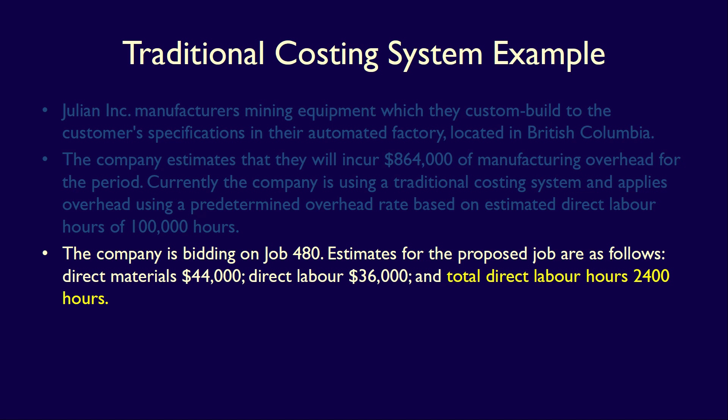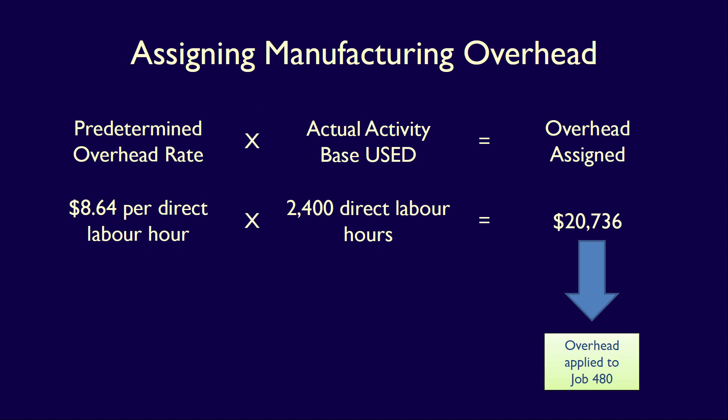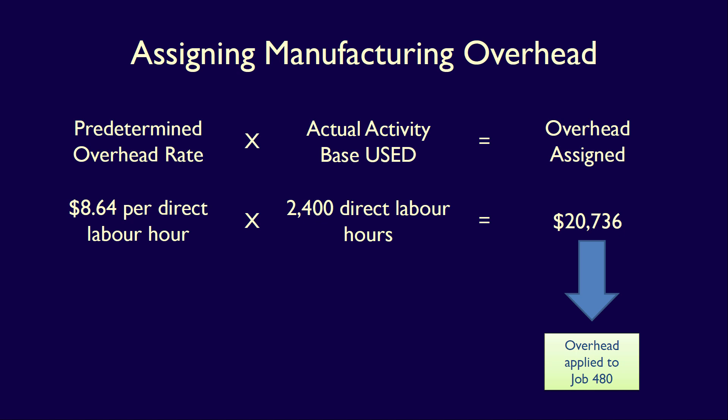The company estimates that a total of 2,400 direct labor hours will be used in producing this job, so we can use this information to calculate the allocation of manufacturing overhead. The predetermined overhead rate of $8.64 per direct labor hour multiplied by 2,400 direct labor hours equals $20,736 — the estimate of how much overhead will be consumed when producing Job 480. The total estimated cost of Job 480 is: direct materials of $44,000 plus direct labor of $36,000 — both costs directly traced to the job — plus applied manufacturing overhead of $20,736, allocated using the plant-wide overhead rate.